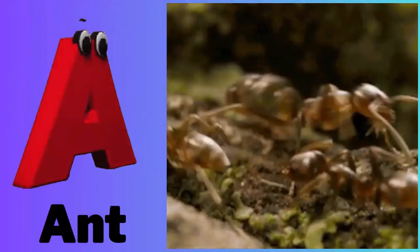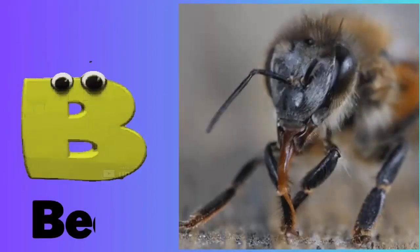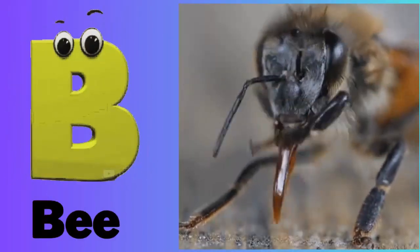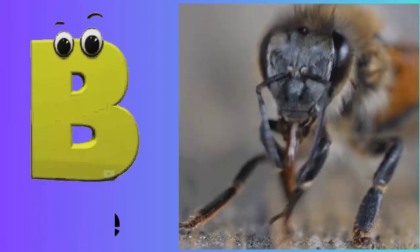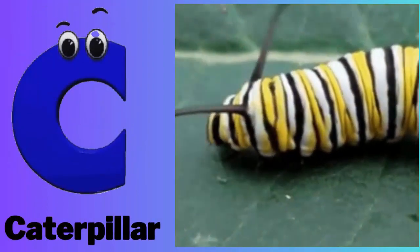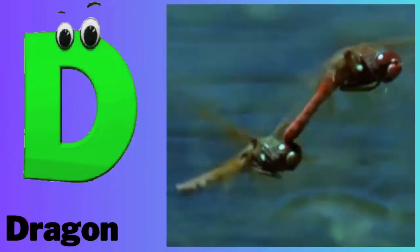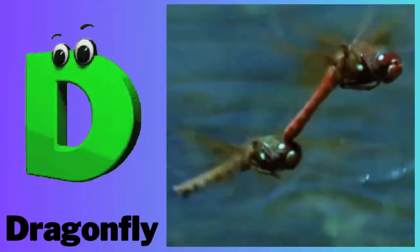A - A for ant. B - B for bee. C - C for caterpillar. D - D for dragonfly.